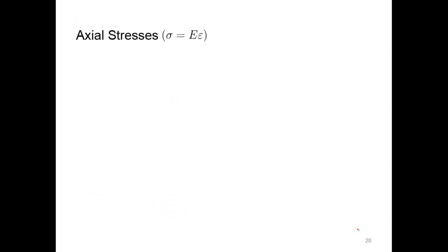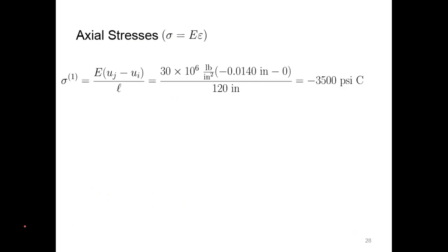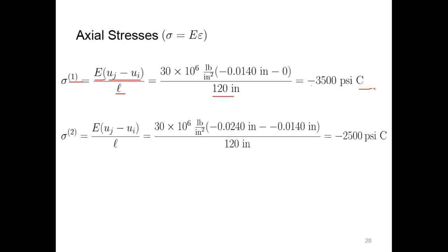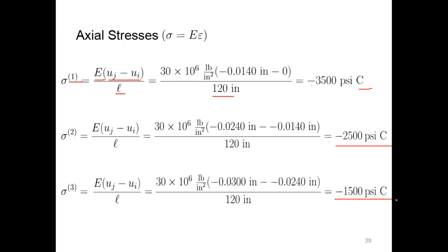Now let's calculate the axial stresses. The axial stress equals force over area, which reduces to the modulus times the change in length based on displacements at nodes i and j over L. For element one: 30 × 10⁶ PSI times (negative 0.014 inches at node j minus zero at node one) over 120 inches gives negative 3,500 PSI in compression. For element two, we get negative 2,500 PSI in compression, and for element three, negative 1,500 PSI in compression.